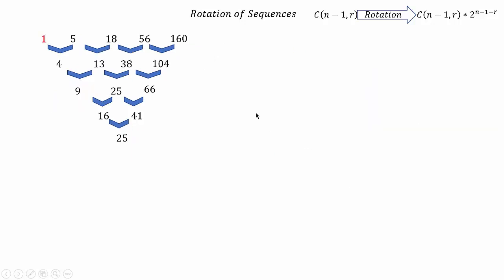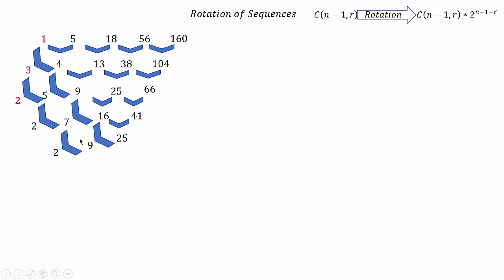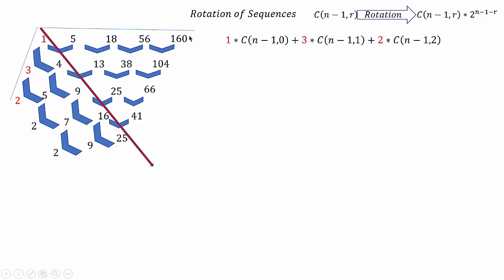Let's do another example. This is the second example shown at the start of the video. We already found the differences of the sequence and concluded that the diagonal elements follow a familiar sequence, which is n squared. Let's find the common difference between these diagonal elements: 4 minus 1 is 3, 9 minus 4 is 5, and so on. Finding the differences again: 5 minus 3 is 2, 7 minus 5 is 2, and 9 minus 7 is 2. So we reach a common difference of 2. Now we find the general term for this sequence using the elements 1, 3, and 2.